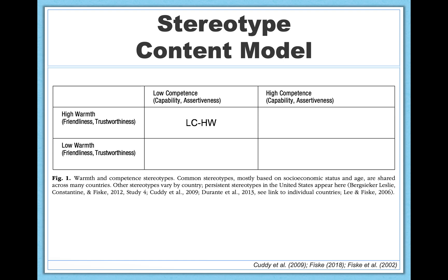The first group is LCHW — low competence, high warmth. These groups are sometimes referred to as clusters and numbered, like cluster one, cluster two, and so on. That labeling comes from cluster analysis, a statistical operation used to form these groups based on empirical data. That doesn't matter too much for our purposes, but numbering is a more arbitrary labeling system, so I and many others refer to the clusters by their competence and warmth descriptors instead.